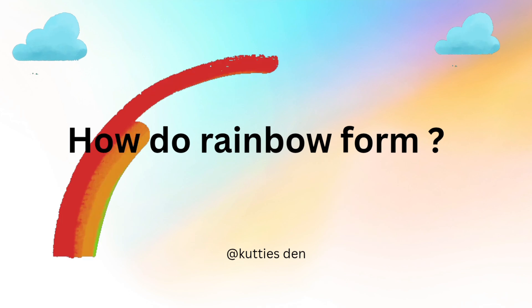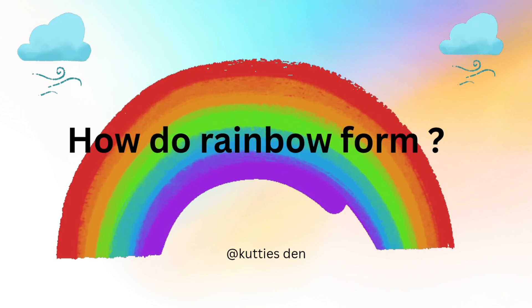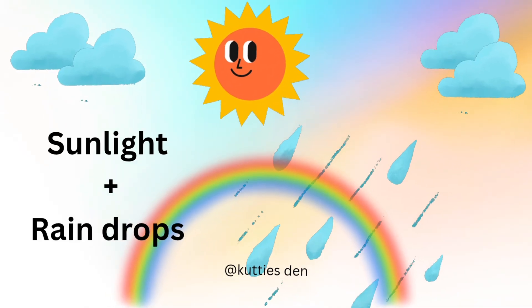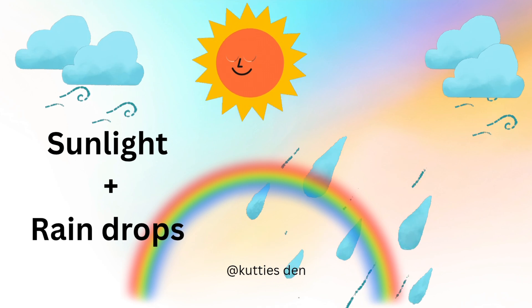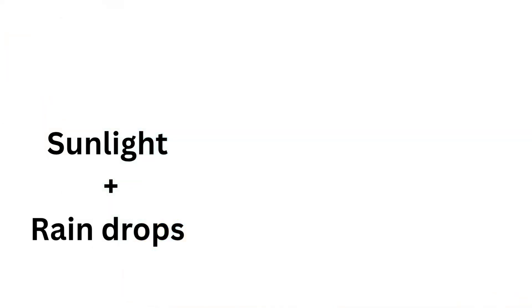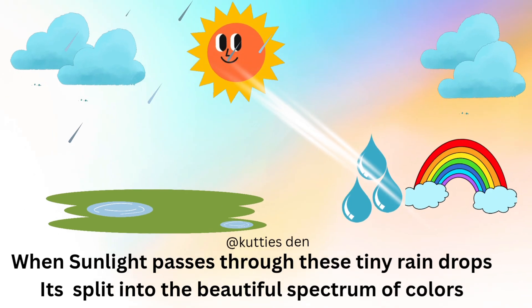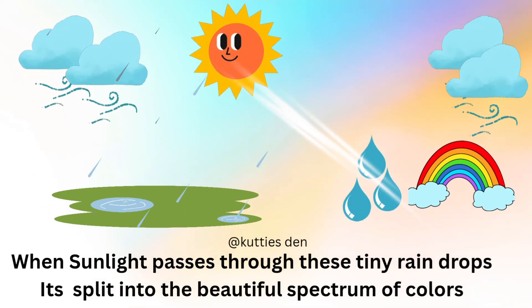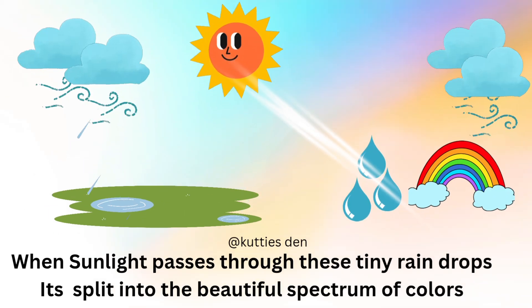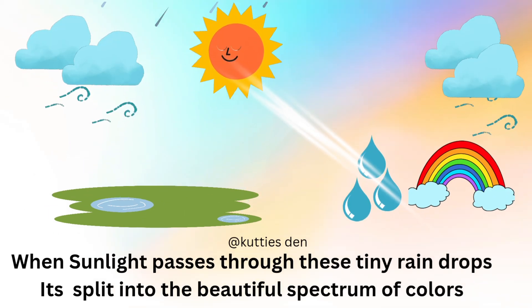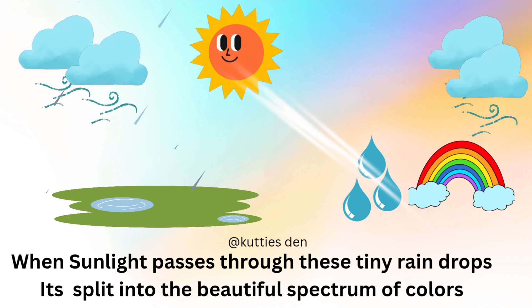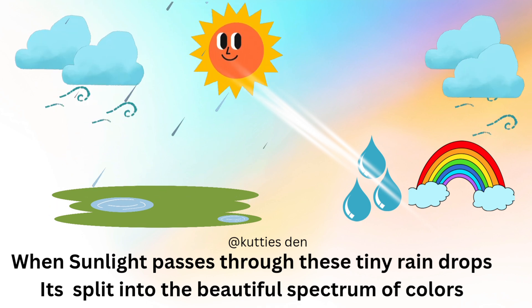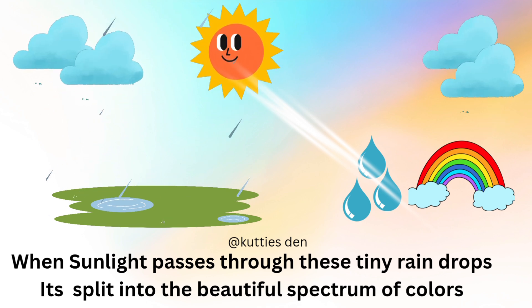How do rainbows form? Sunlight plus raindrops. When sunlight passes through these tiny raindrops, it's split into the beautiful spectrum of colors.